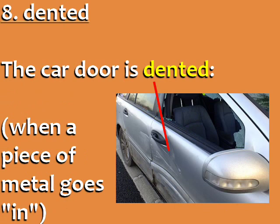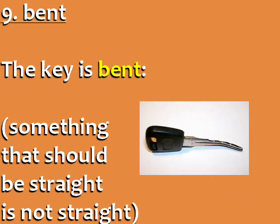Number 8: Dented. The car door is dented. This word is used when a piece of metal goes in. Number 9: Bent. The key is bent. The word bent is used when something that should be straight is not straight.